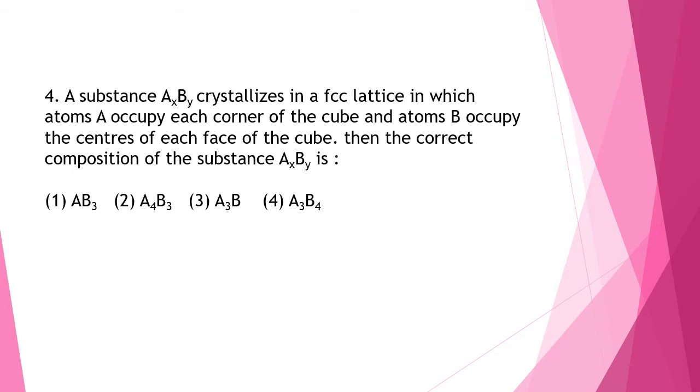So this is FCC and A occupies the corner. So there are 8 corners. Each corner contribution is 1 by 8. So 8 into 1 by 8 will be 1. And for B, B occupies the center of each face of the cube. So the total of the face is 6. And the contribution of each face is 1 by 2. So 1 by 2 into 6 is equal to 3.